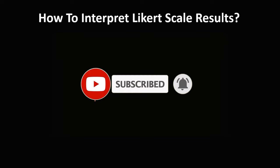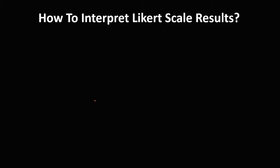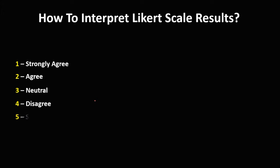So first, we need to have these categories. For example, we have 1 for strongly agree, 2 for agree, 3 for neutral, 4 for disagree, and 5 for strongly disagree.